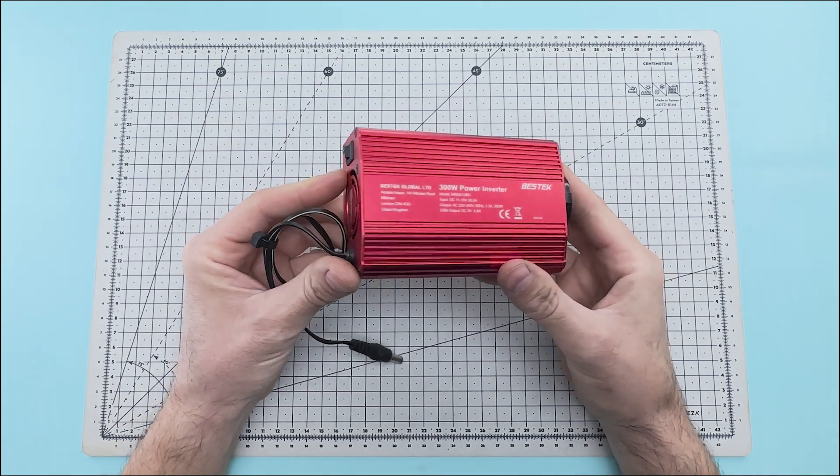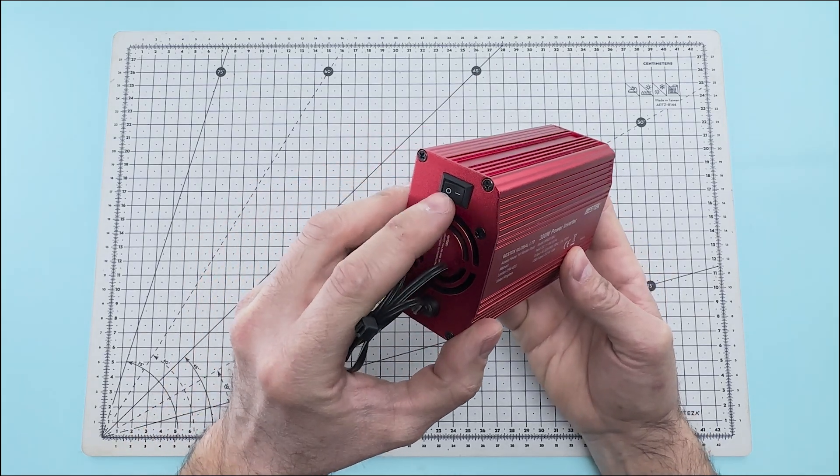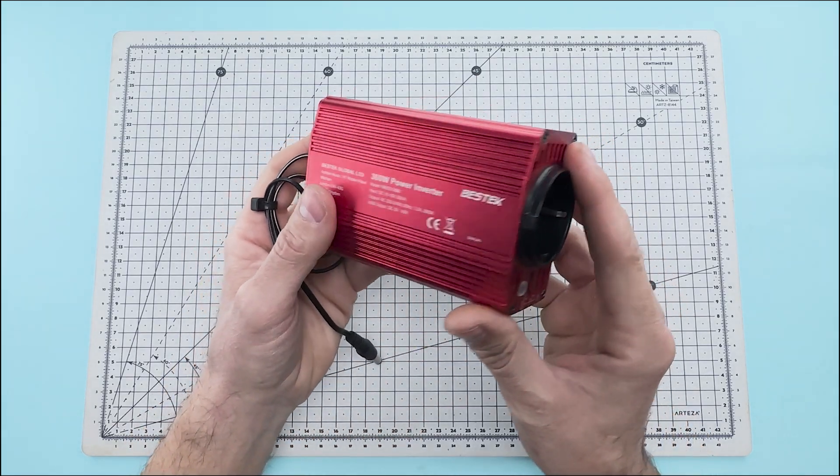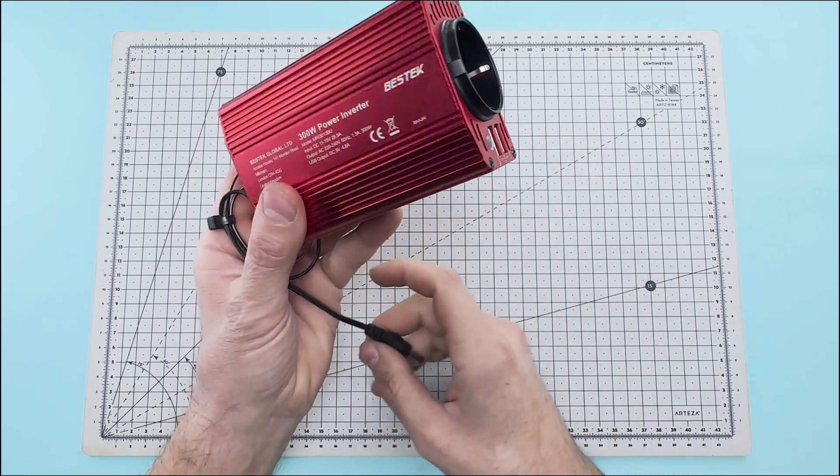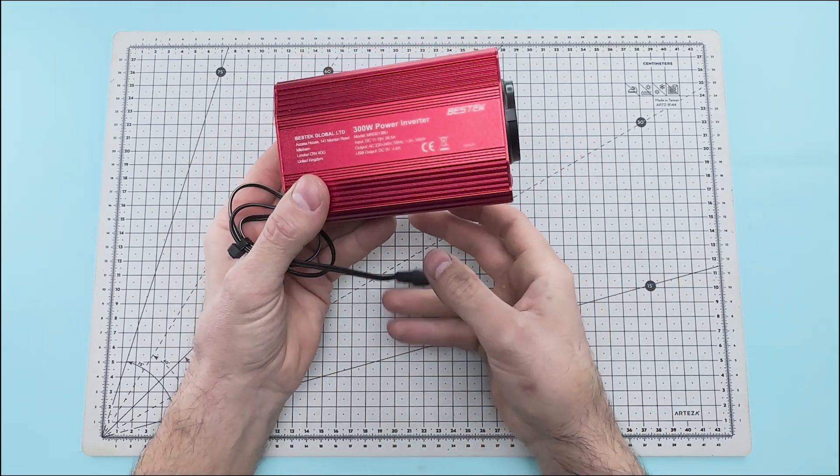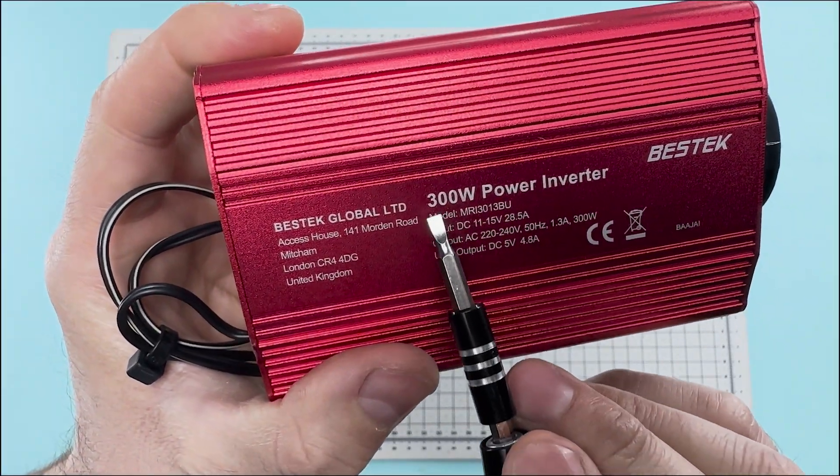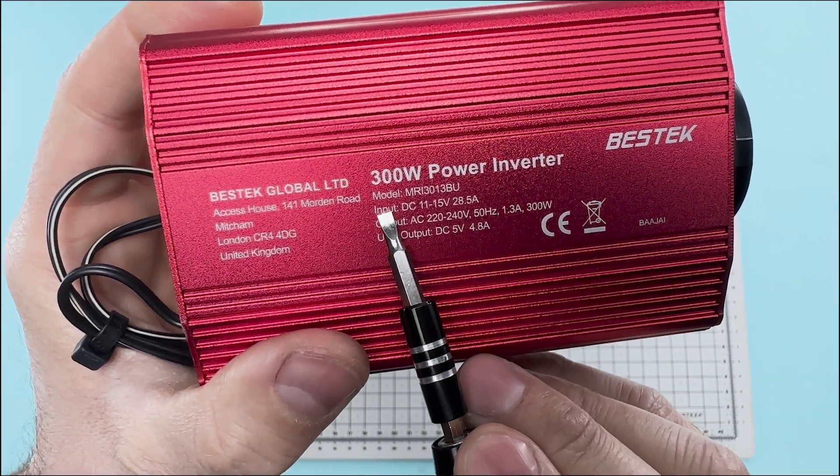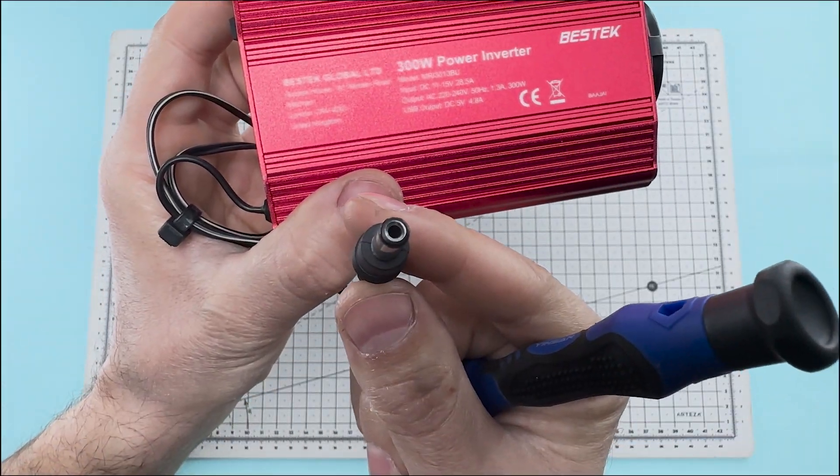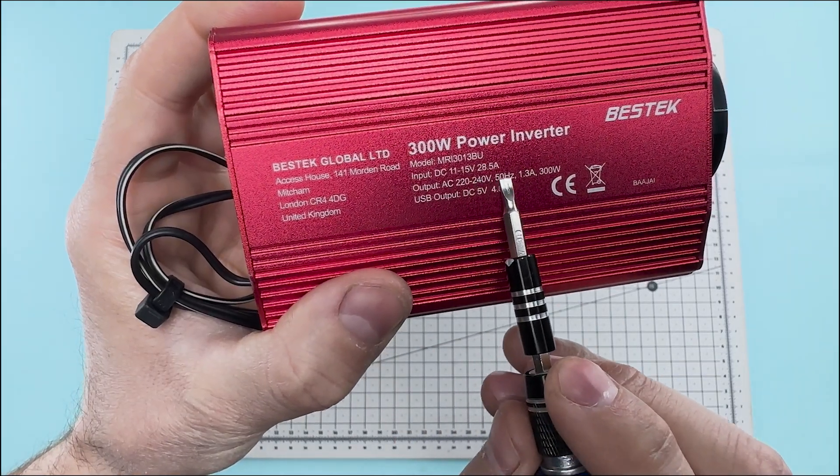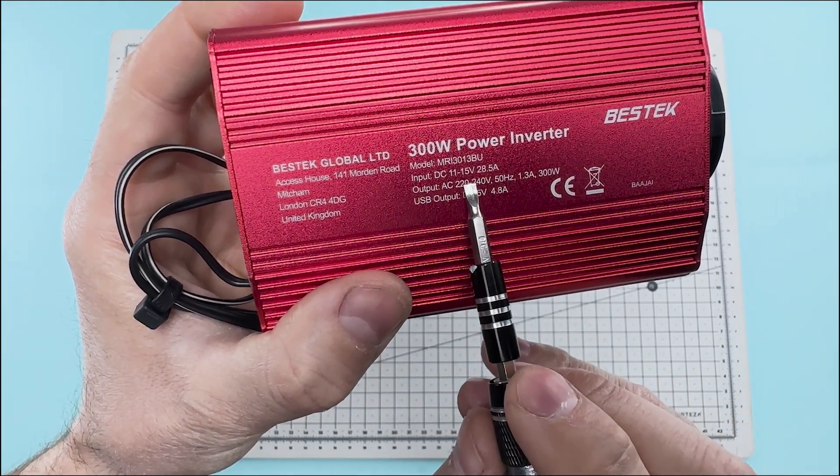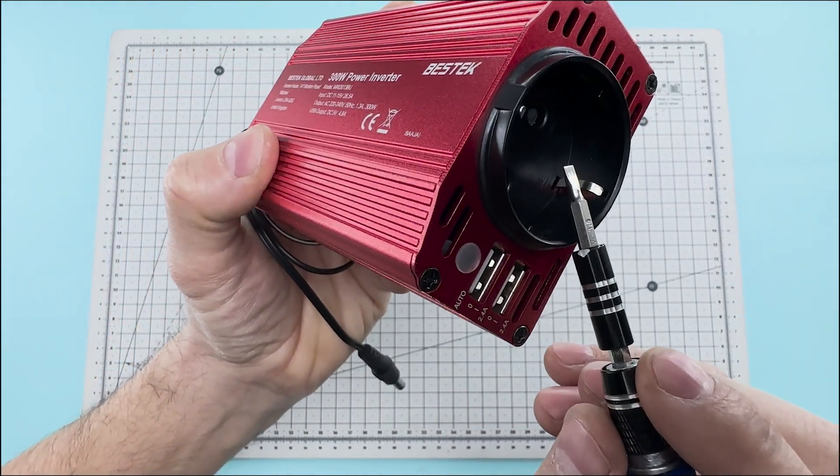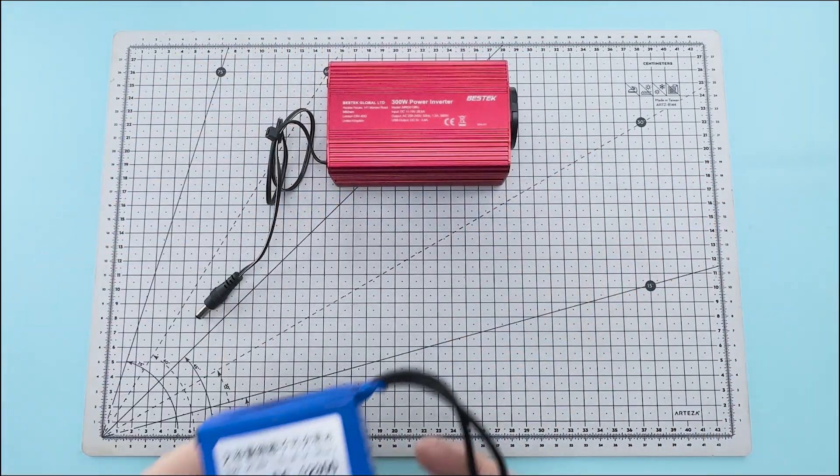We are going to create a small electrical circuit that feeds back into itself. We will use a 300 watt power inverter. This power inverter is powered by a 12 volt direct current and has an output of 220 volts of alternating current at 50 hertz. The power inverter will transform the voltage from 12 volts direct current to 220 volts alternating current.